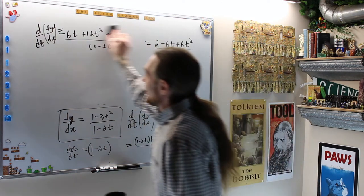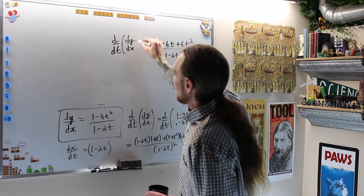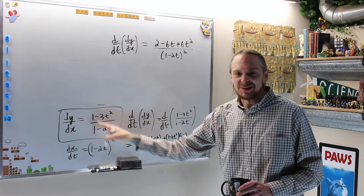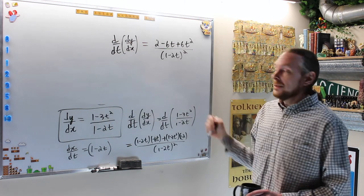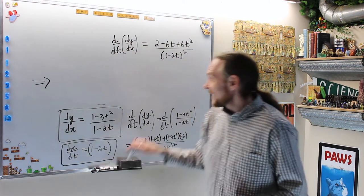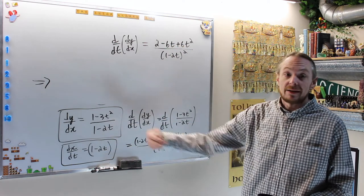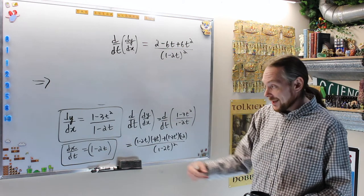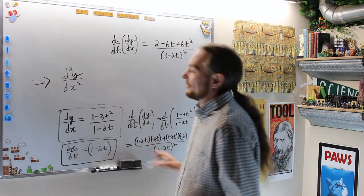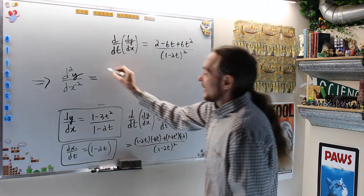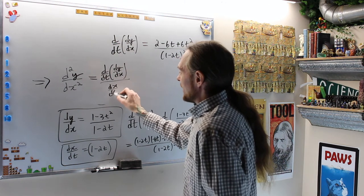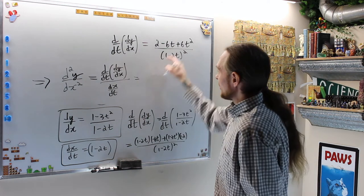This is d/dt of dy/dx. That gives me two of those cancel, so I get 2 minus 6t plus 6t² over 1 minus 2t squared. That thing is now d/dt dy/dx, which is hard to see in the symbolization when you've done this, that is a function of t, is what's hard to see, is a function of t now, and then I took its derivative with respect to t.